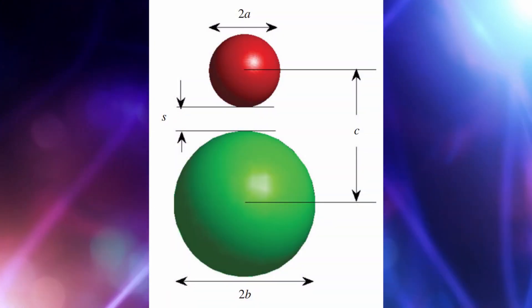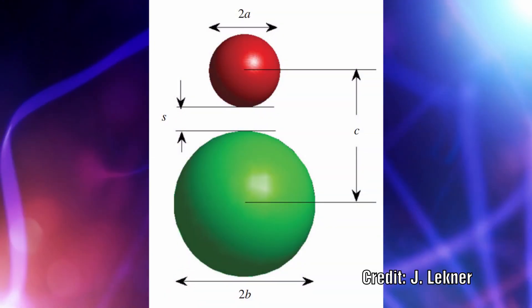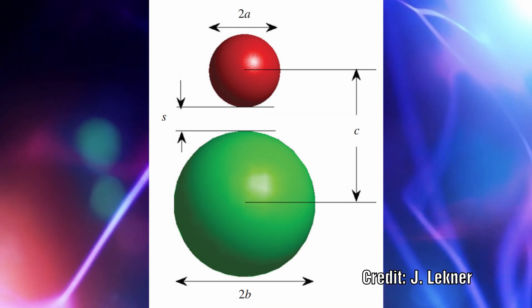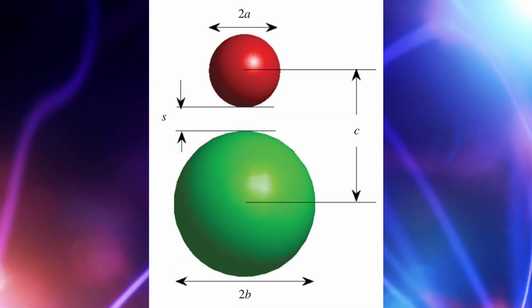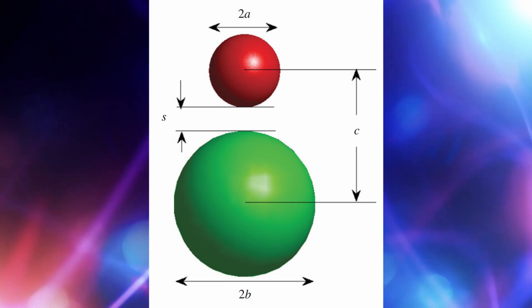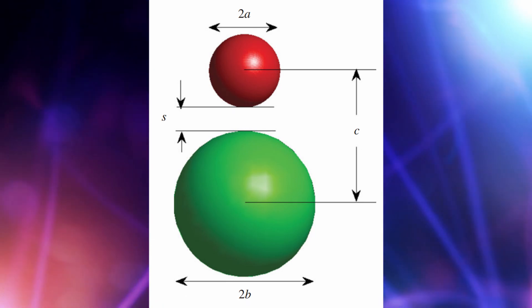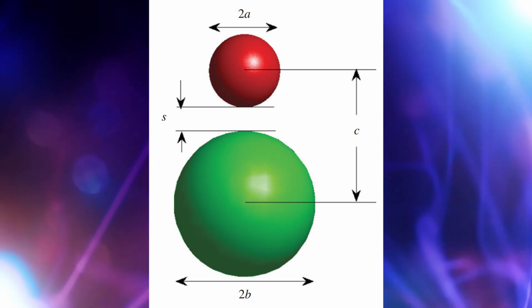Let's take a system of two spheres of radii A and B. There are a number of elements that are important to understand in this system. Firstly, the centres of mass are separated by a distance C and the separation between the physical surface is a distance S.